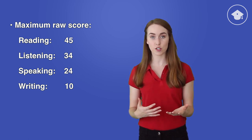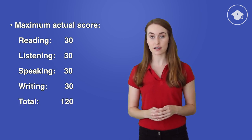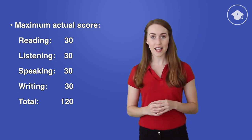Finally, your raw score is converted to an actual score. The highest possible score on each section is the same, 30. So the highest possible total score, 4 times 30, is 120.